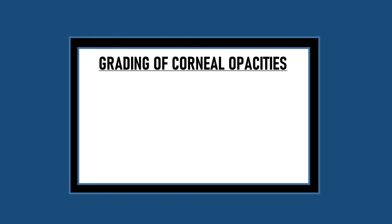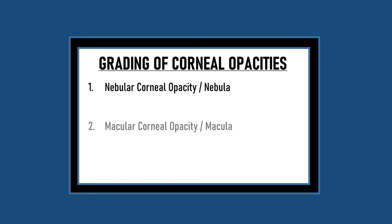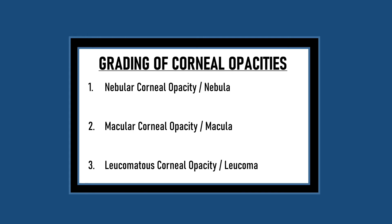Corneal opacities have been classified into 3 grades on the basis of their density. First is nebular corneal opacity, or nebula. Second is macular corneal opacity, or macula. Third is leucomatous corneal opacity. Nebula is the mildest form, macular is denser than nebula, and leucomatous is the most dense form.